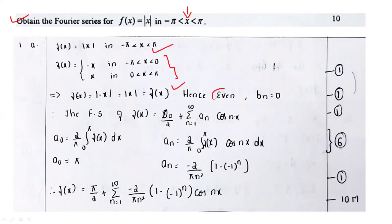So, you know that for an even function in the Fourier series, b_n will be equal to 0. At that point, you will be getting one mark for identifying the even function, and the definition of the function will get you another one mark.